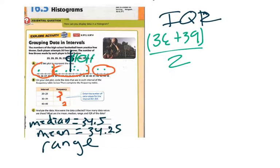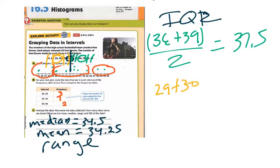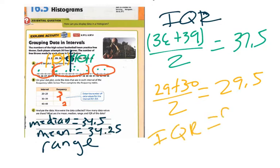Now I need my lower quartile. That's 29 plus 30 divided by 2, which is 29.5. So I take 37.5 minus 29.5 to get an interquartile range of 8. And that's what we're looking for on this 16.5 page.